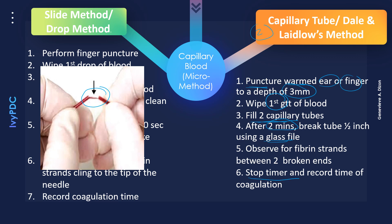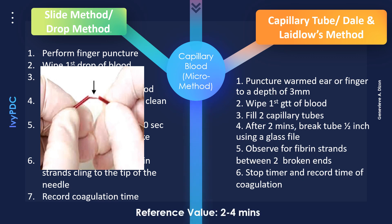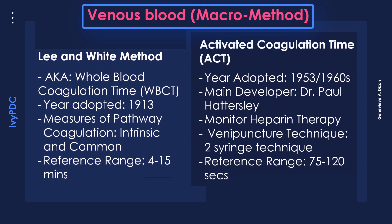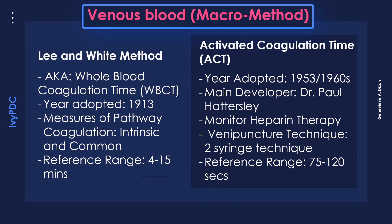Once clot formation is seen, stop the timer and record the coagulation time. The reference values for both micro procedures is two to four minutes. For the macro method, the Lee and White method is also known as the whole blood coagulation time or WBCT, adopted in 1913. This test measures both the intrinsic and the common pathway and has a reference range of 4 to 15 minutes.